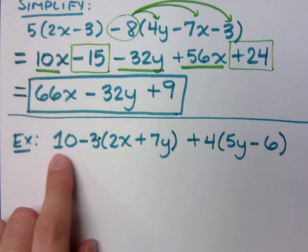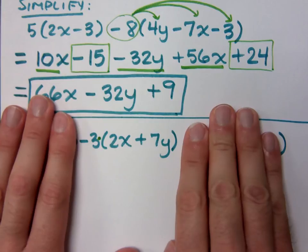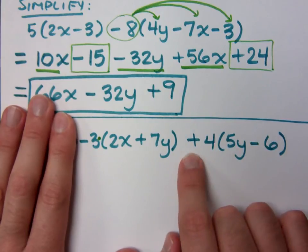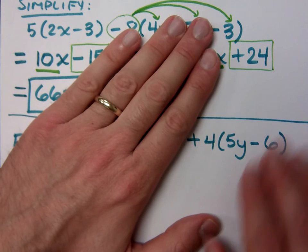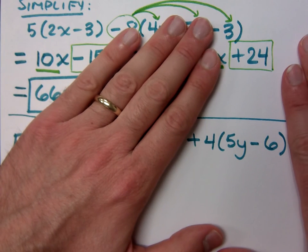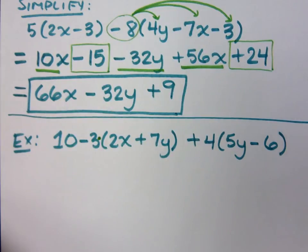So I had 10. Then I had this guy right here, this negative 3 times that group 2x plus 7y. Then here's an addition. So it's another break, another separation. And then I have this. I have 4 times 5y minus 6. Do you see the different groups here? So what we're going to do is we're going to multiply out what we can using the distributive property and then combine like terms.